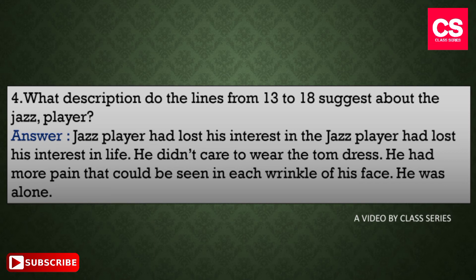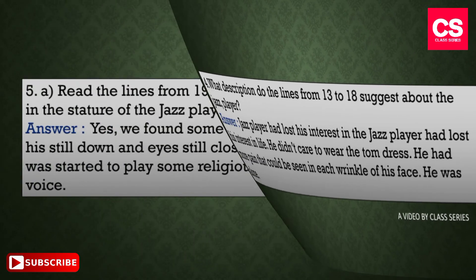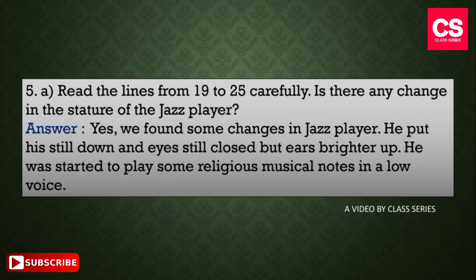Our fourth question is: what description do the lines from 13 to 18 suggest about the jazz player? The answer: the jazz player had lost interest in his life. He did not care to wear proper dress. He had more pain than could be seen in each wrinkle of his face, and he was alone.